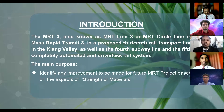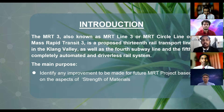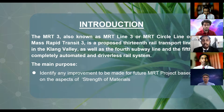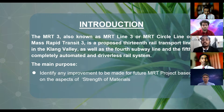We will start our presentation now. The MRT3, also known as MRT Line 3 or MRT Circle Line or Mass Rapid Transition 3, is a proposed 13 rail transport line in the Klang Valley, as well as the port subway line and the fifth completely automated and driverless rail system. The main purpose of the MRT3 project is to identify any improvements to be made for future MRT projects based on the aspects of strength of materials.